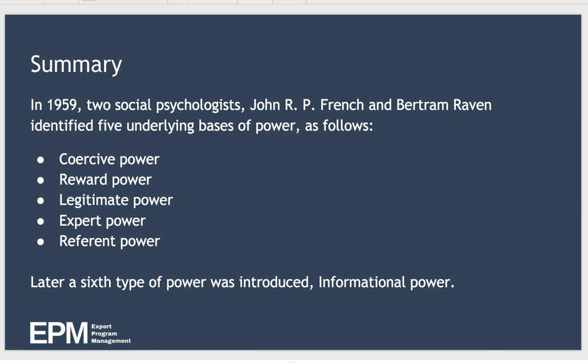In summary, in 1959, two social psychologists, John R.P. French and Bertram Raven, identified five underlying bases of power: coercive, reward, legitimate, expert, and referent. It's also worth knowing that later a sixth type of power was introduced called informational power. Power and how you use it can impact your relationship with colleagues, organization culture, and employee engagement and motivation. It can be a really good idea to check through the list of power types before an important conversation to ensure you're approaching the interaction from the best possible power base.